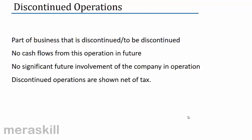A couple of other items appear on the income statement. One is discontinued operations. What do you mean by discontinued operations? As the name suggests, it's a discontinued operation. Suppose you have a company which has, let us say, five branches.